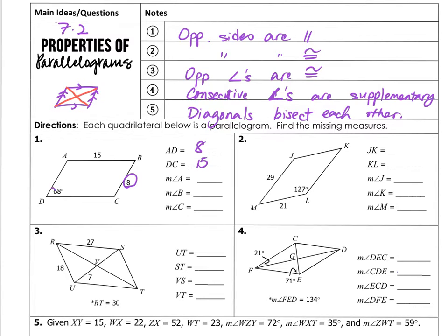And if we know this is 68 degrees, I know angle D must be 68 degrees, and then I know angle A is 180 minus 68, that should give me 112, and angle C is opposite of angle A and it should be congruent.